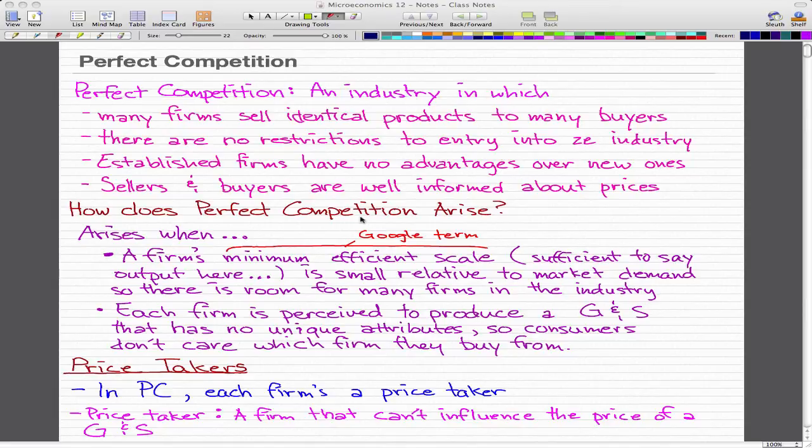So like always, we'll start the chapter with some definitions. Here's what perfect competition is: it's an industry where we have many firms that sell identical products to buyers. There are no restrictions to entry into the industry, established firms have no advantage over new ones, and sellers and buyers are well informed about prices.